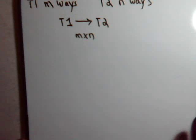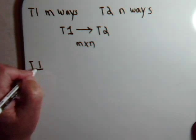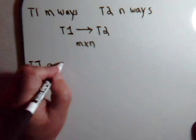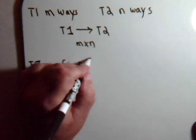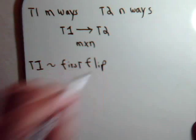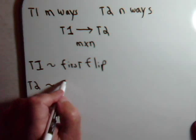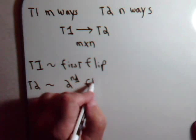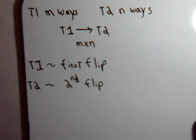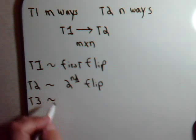So, again, we can think of it as task T1. That's just the first flip. Task T2. That should be the second flip. And then task T3, obviously, is just the third flip.